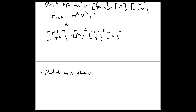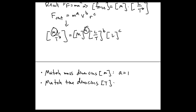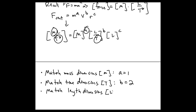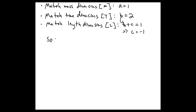We want to match the mass dimensions on both sides. Matching mass dimensions, we find a is equal to one. Matching time dimensions, the only way that can work is if b is equal to two. And matching length dimensions, the only way that can work is if b plus c is equal to one. Using the fact that b is two, that tells us c is negative one.